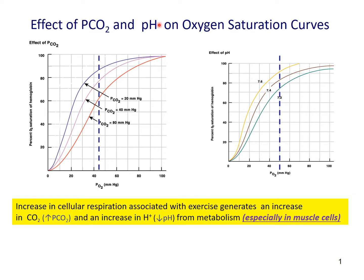When we have increased metabolism, we generate more carbon dioxide, and that also means we need more oxygen. As a result, the oxygen binding curve shifts towards the right hand side, so that more oxygen can be released at any given PO2 level.